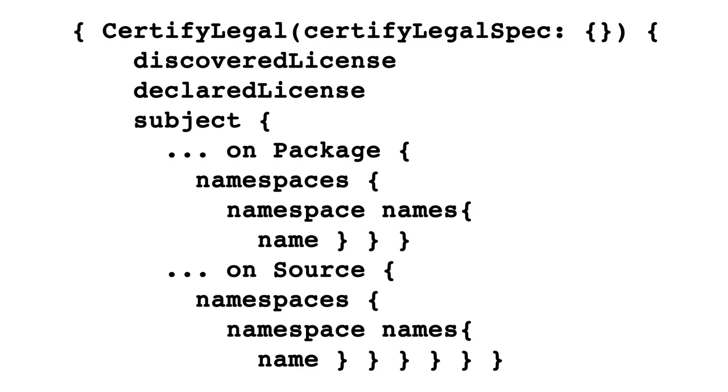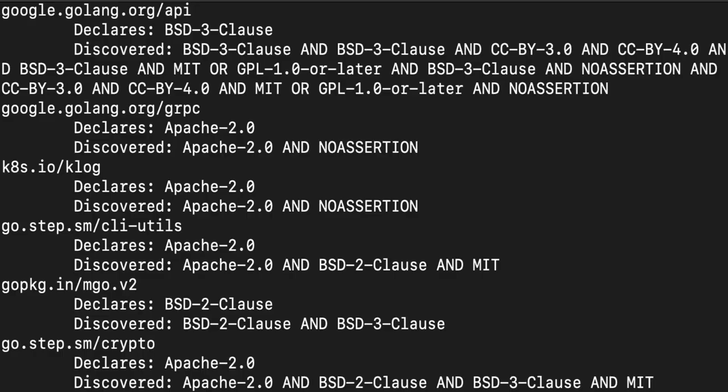With a GWAC query, you can get the declared and detected licenses for each package and artifact. To tie it all together, I wrote a Python script that compares the declared and detected licenses and prints the ones that don't match.